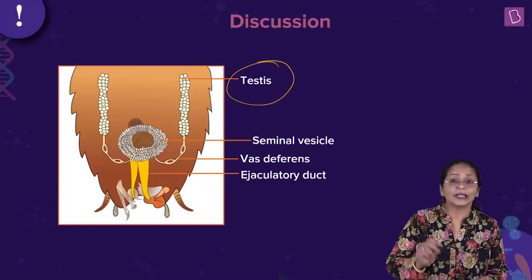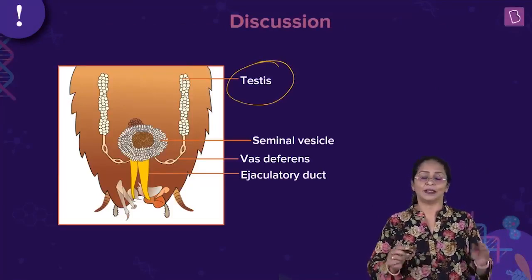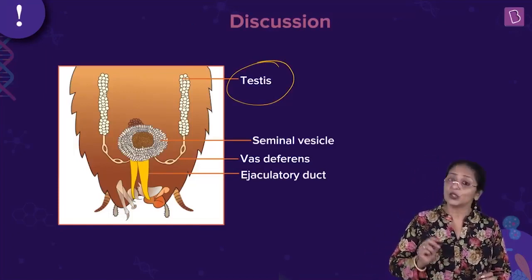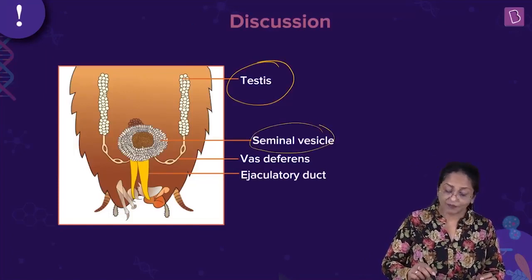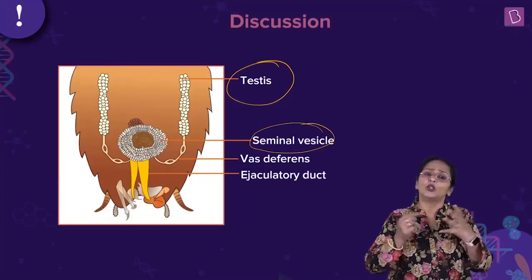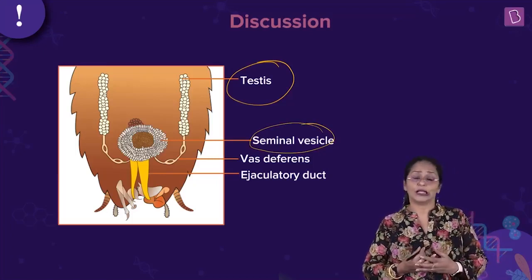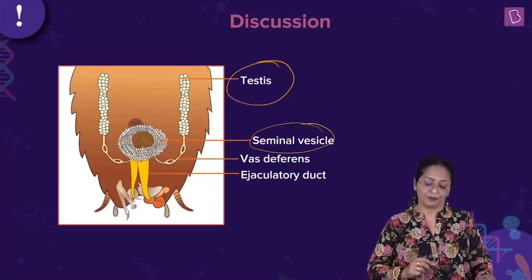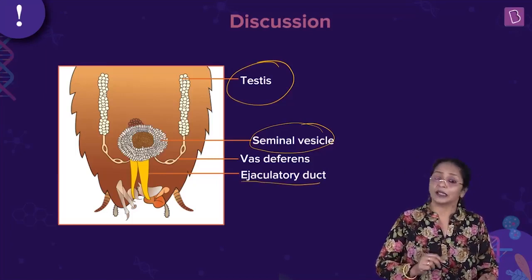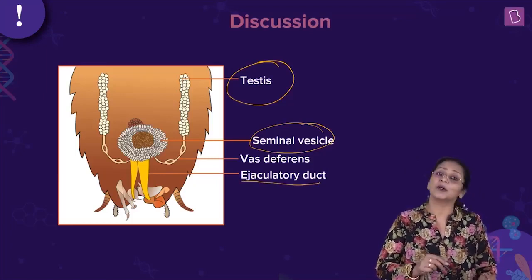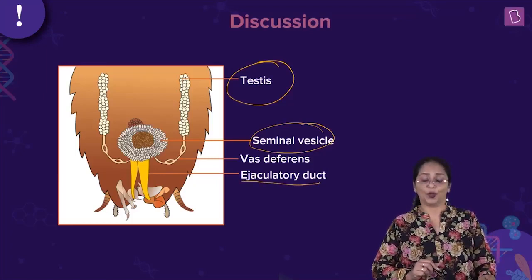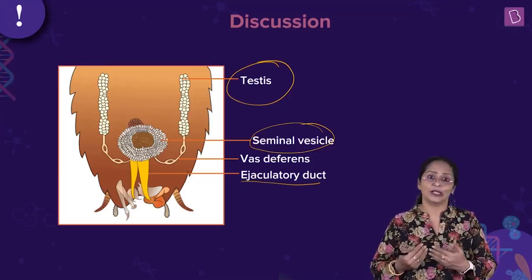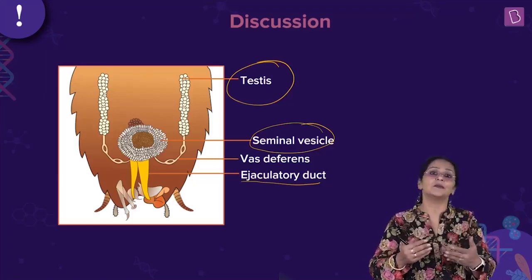The testis is where the sperms are formed. These sperms are stored in the seminal vesicle, where they glue together to form what is called a spermatophore. The nourishment for these developing sperms is provided by the mushroom gland. The ejaculatory duct carries the formed sperms to the genital pore. Vas deferens are ducts helping in the passage and movement of the sperm as a transport medium.